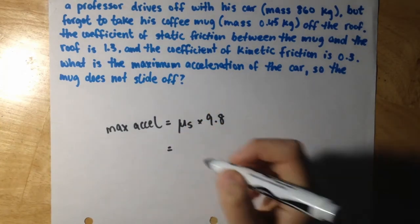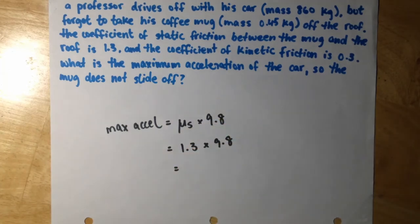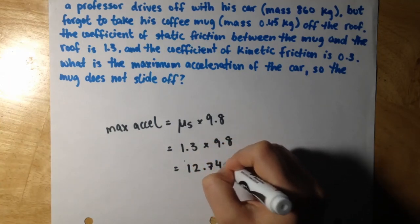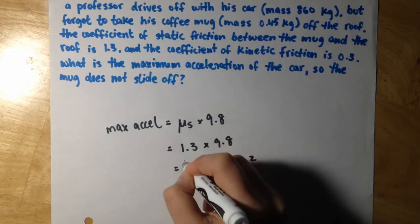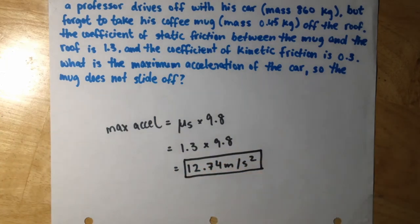So in the problem they told us that is 1.3 times 9.8, and we can put that into the calculator to get 12.74 meters per second squared. This is the max the professor can accelerate before his mug will slide off the roof.